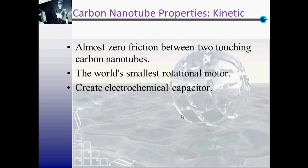Let's talk about the properties of carbon nanotubes. First, kinetic properties. There is almost zero friction between two touching carbon nanotubes, which means a single nanotube is able to rotate against other nanotubes with very low friction.